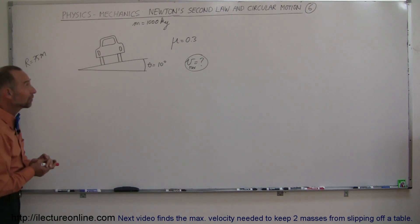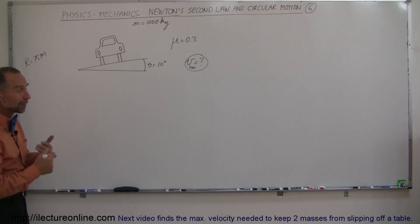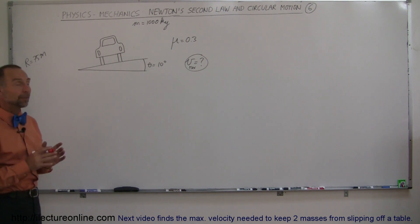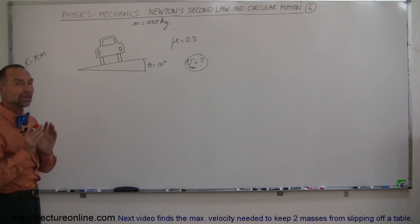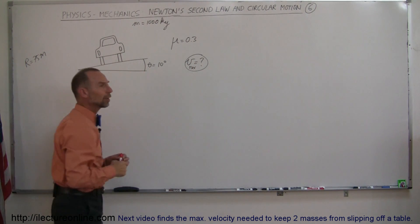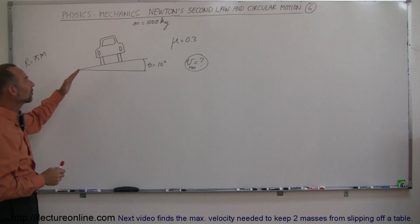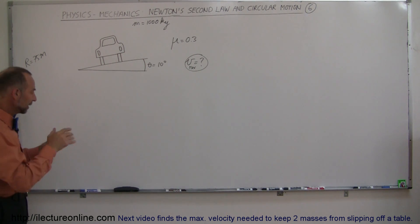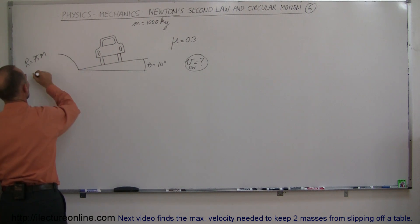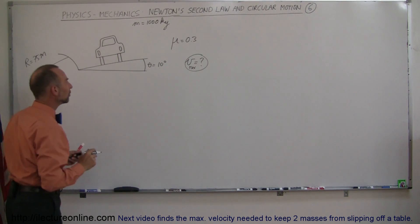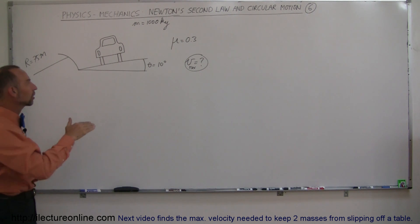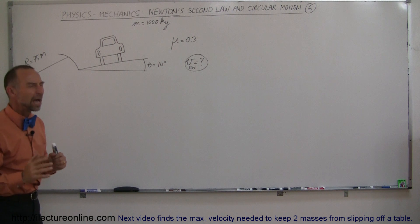Here's our sixth example of how to deal with circular motion, keeping in mind Newton's second law. This is a complicated problem — it looks a lot like the previous one, except in this case we also have a coefficient of friction between the tires and the road. The road is banked, and the car is going around a curve with a radius of 75 meters. We want to find the maximum speed the car can have without sliding off the road.